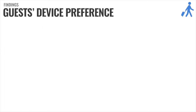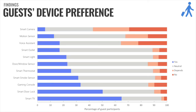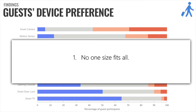Now let's look at the findings — first, guest device preferences. We presented smart devices to guests and asked them which they would like to have in their Airbnb on a four-point scale: yes, neutral, depends on the location of the device, and no. We found that the most wanted devices — towards the bottom of this chart — were smart TV, door lock, and gaming console. The least wanted were smart camera, motion sensor, and voice assistant, which are somewhat privacy-invasive devices. But for each device, there were participants who wanted it as well as participants who did not, highlighting that there is no one-size-fits-all in terms of devices for Airbnb or short-term rentals.